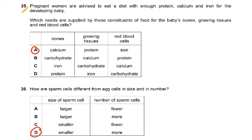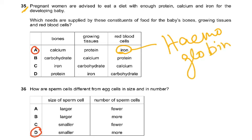Pregnant women are advised to eat a diet with enough protein, calcium and iron for the developing baby. Which needs are supplied by these constituents of food for the baby's bones, growing tissues and red blood cells? Calcium is needed for the bones. Protein is needed for the growing tissues and red blood cells. We need iron, not for the red blood cells, but for the hemoglobin which is inside the red blood cells. And we can't have red blood cells without hemoglobin.